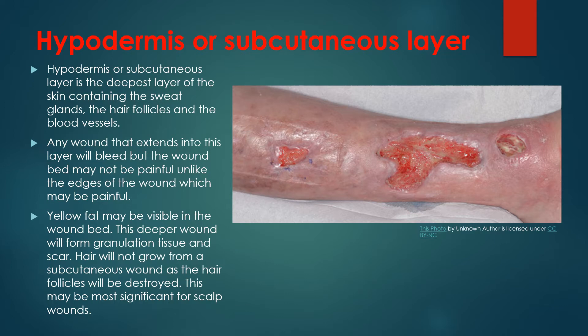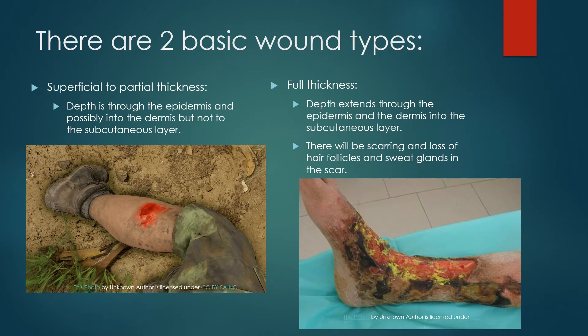This may be most significant for scalp wounds. There are two basic types of wounds. There's the superficial to partial thickness wound — the depth is through the epidermis and possibly into the dermis, but not into the subcutaneous layer. And then there is a full thickness wound, where the depth extends through the epidermis and the dermis into the subcutaneous layer. There will be scarring and loss of hair follicles and sweat glands in the scar.